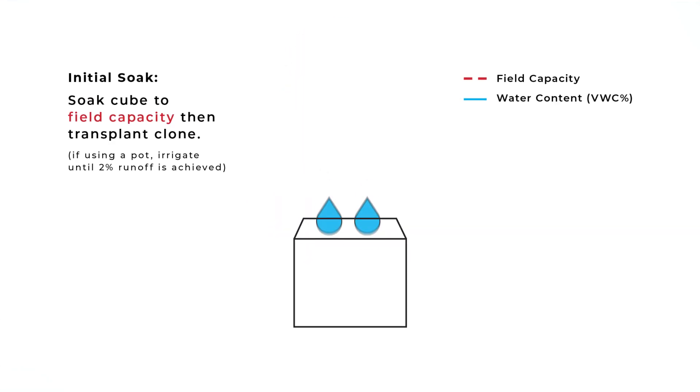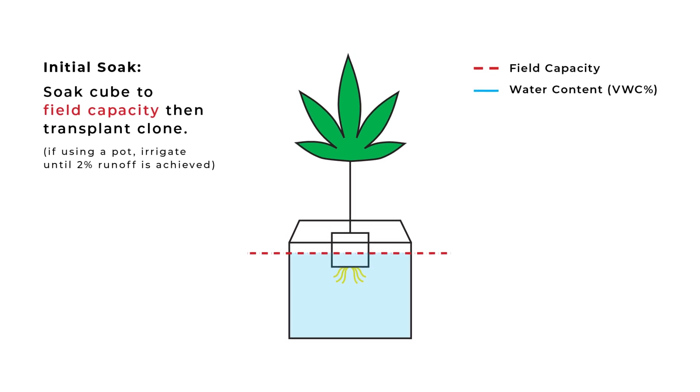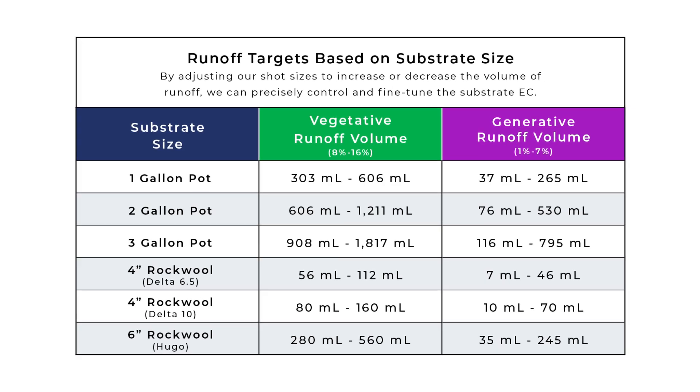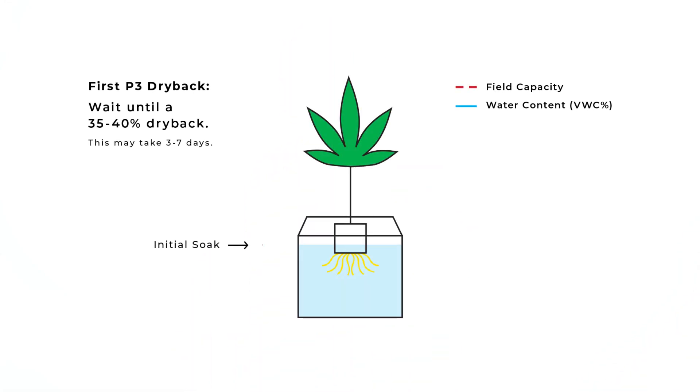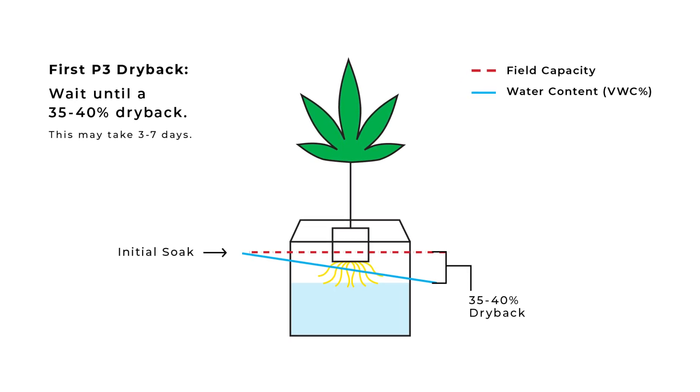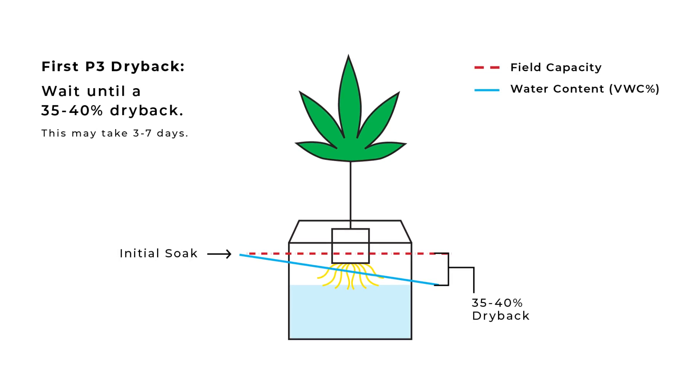When transplanting clones into new media, we must be extremely careful not to overwater the substrate. Excess water can lead to stagnant roots and delayed growth. When using rockwool as your substrate, soak your media in pH-adjusted nutrient solution until fully saturated. If using coco, saturate your media by pouring nutrient solution over the top of the substrate until 2% of the total substrate volume in runoff is achieved. Reference our runoff volume chart to help calculate the volume of your runoff. Using a media sensor, note the VWC percent at the point of runoff. After transplanting your clone into your media, we want to make sure that we have a 35 to 40% dryback before we irrigate again to encourage roots to stretch into the media and to avoid overwatering. Depending on your substrate size, this could take multiple days to achieve this dryback.